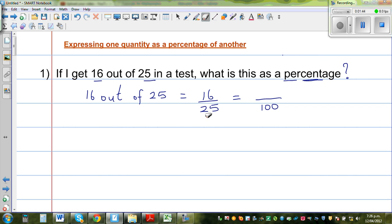So I want to write 16 out of 25 is equal to something out of 100. So if you know the times table, I'm thinking like this: 25 becomes 100. So 25 times what gives me 100? So 25 times 4 is 100. So you do the same thing to the top number. So I do times this by 4. So 16 times 4, I hope you know is 64.